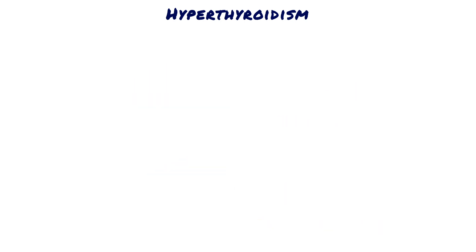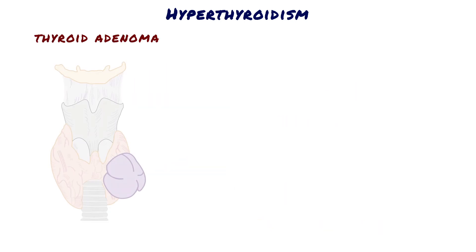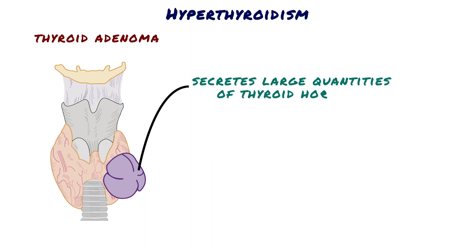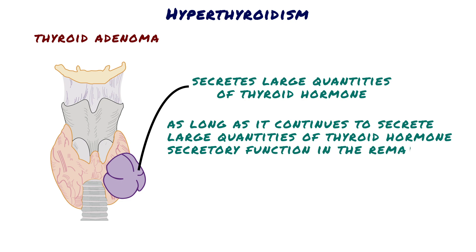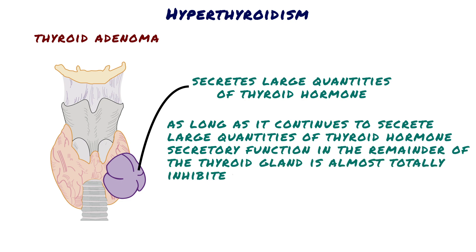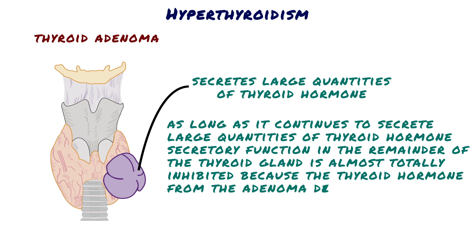Another cause of hyperthyroidism is thyroid adenoma. Hyperthyroidism occasionally results from a localized adenoma that develops in the thyroid tissue and secretes large quantities of thyroid hormone. This is different from the more usual type of hyperthyroidism in that it is usually not associated with any autoimmune disease. As long as the adenoma continues to secrete large quantities of thyroid hormone, secretory function in the remainder of the thyroid gland is almost totally inhibited, because the thyroid hormone from the adenoma depresses the production of TSH by the pituitary gland.